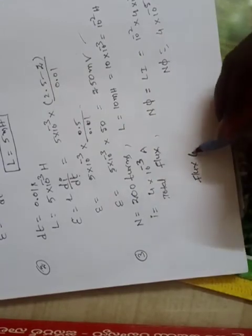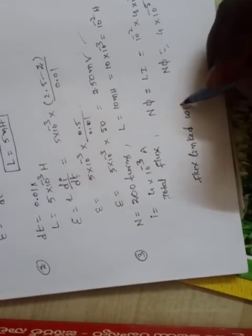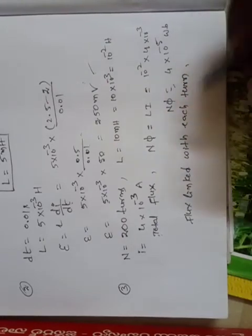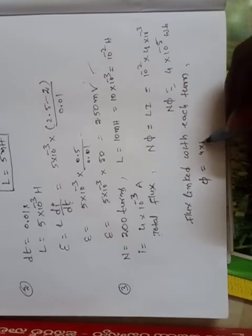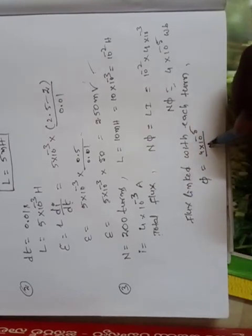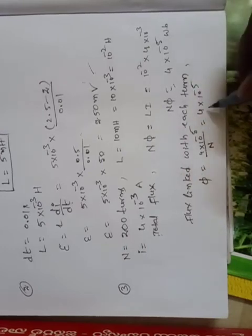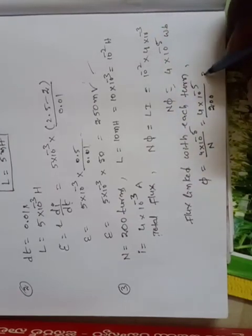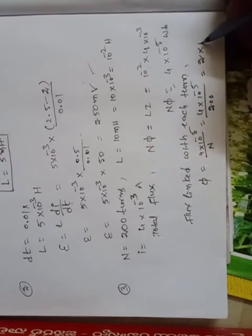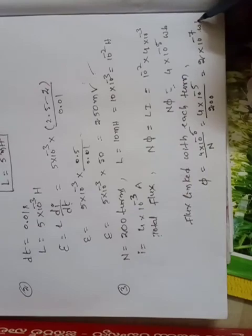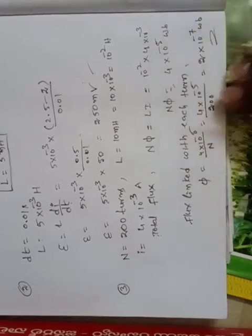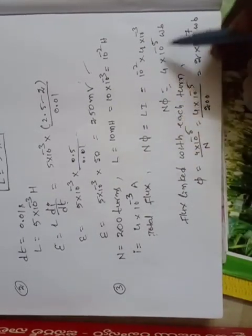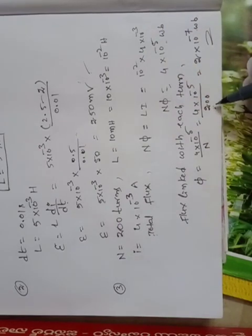Now, flux linked with each turn: φ = total flux / N = (4 × 10⁻⁵) / 200 = 2 × 10⁻⁷ Weber. Total flux is N × φ, so flux linked with each turn means we divide the total flux by the number of turns N = 200. This is the answer for flux linked with each turn.